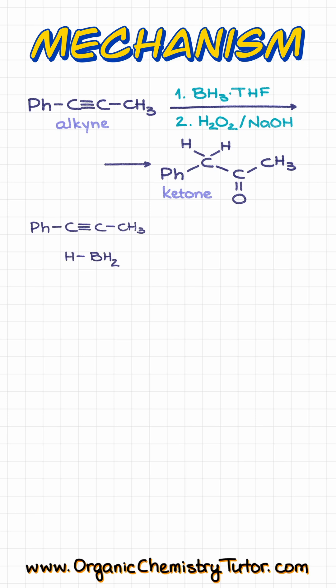Step number one here is going to be the concerted addition of borane to our triple bond, where the boron is going to attach to the less substituted carbon, while the hydrogen is going to attach to the more substituted carbon. In this case, substitution pattern is the same, so we are going to attach our hydrogen to the carbon that is going to stabilize the carbocationic character better, which is this guy next to the phenyl group.